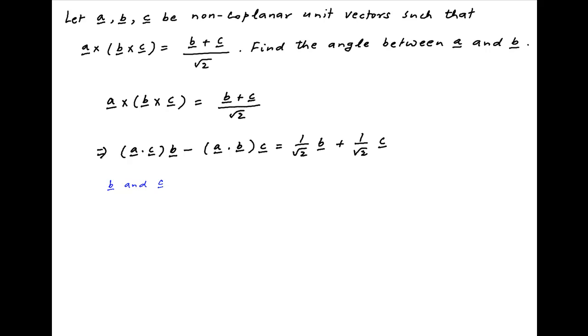Now since vectors b and c are given to be non-coplanar, therefore we can equate the coefficients of vectors b and c across the left hand side and the right hand side. So we get a dot c is equal to 1 upon root 2 and minus a dot b is equal to 1 upon root 2.